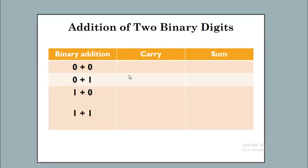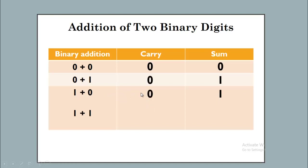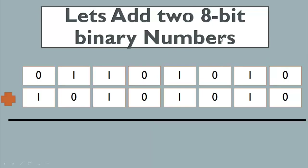First of all, we have to learn how we will add two binary digits. Zero plus zero will give you a sum of zero and carry zero. Zero plus one will give you sum one and carry zero. The same way, one plus zero gives one sum and zero carry. And one plus one in binary equals two, which gives us zero sum and one carry.